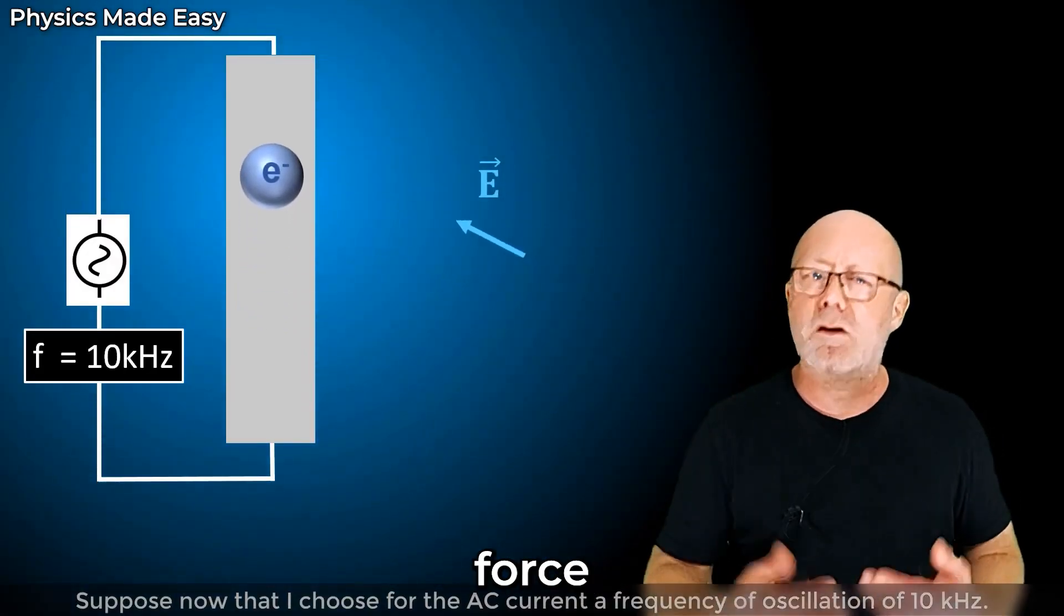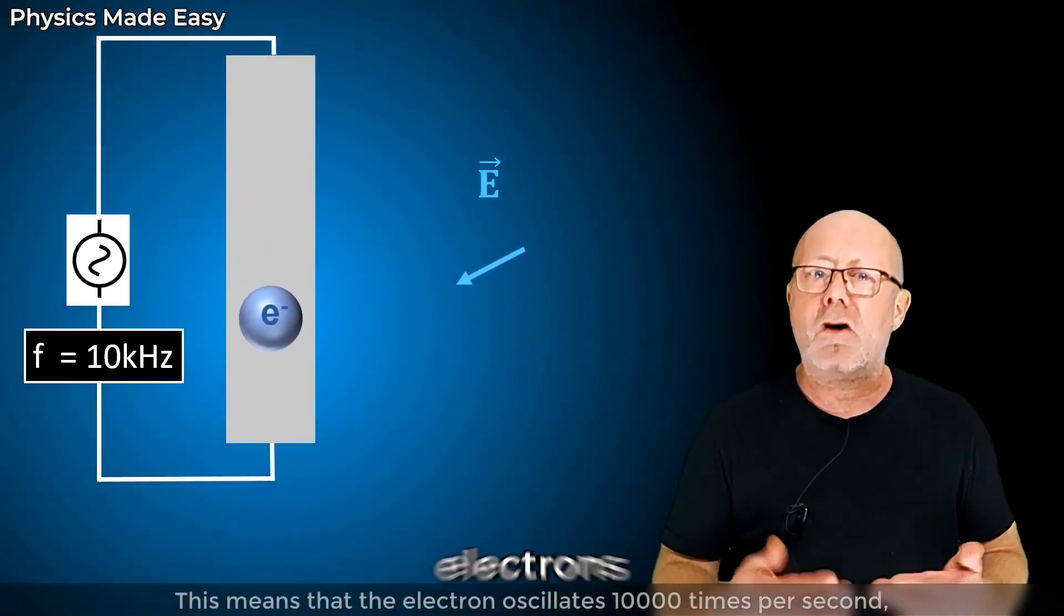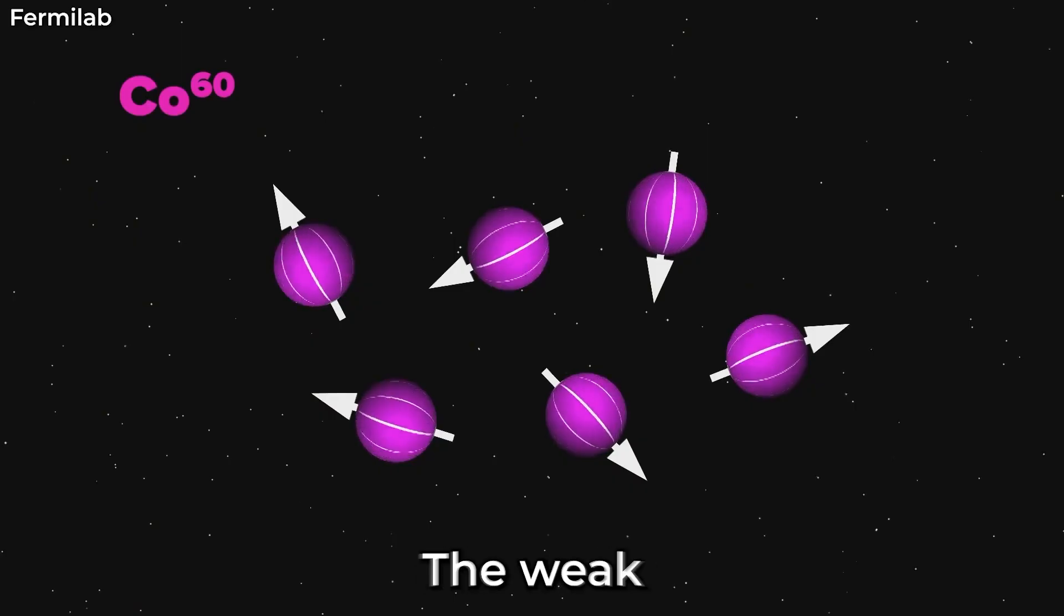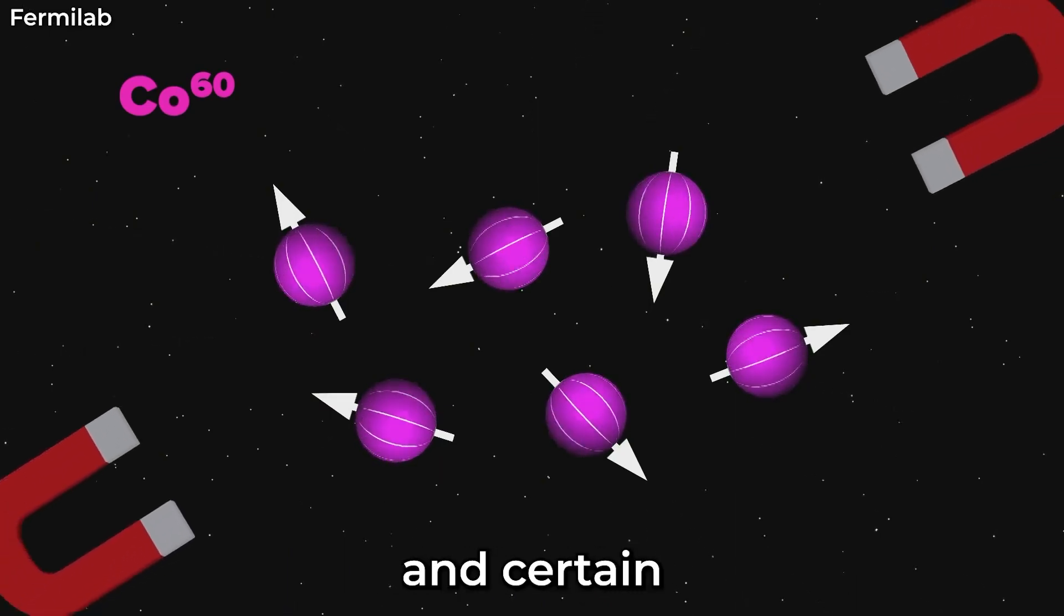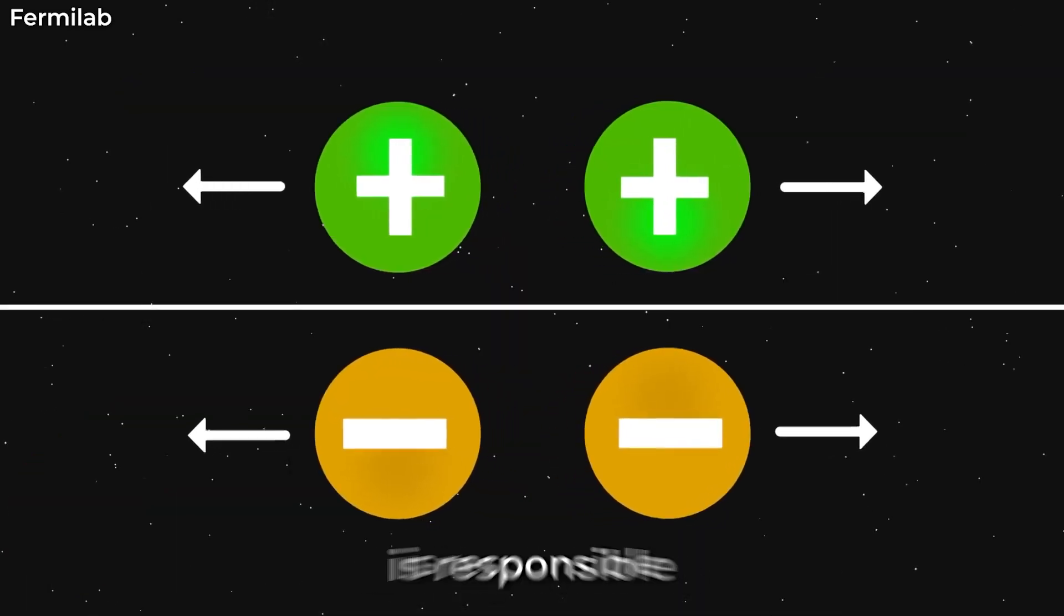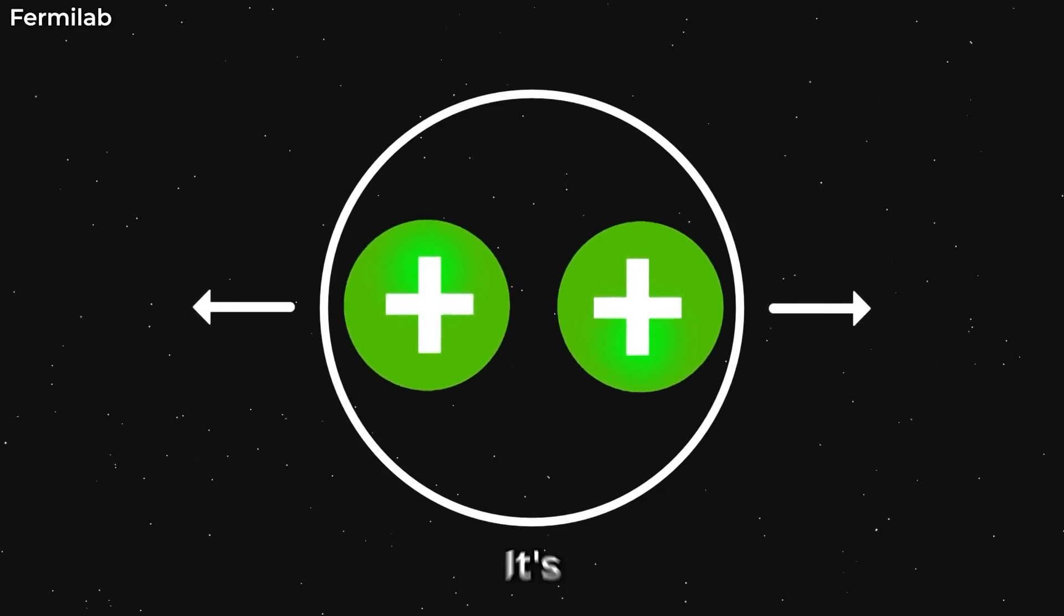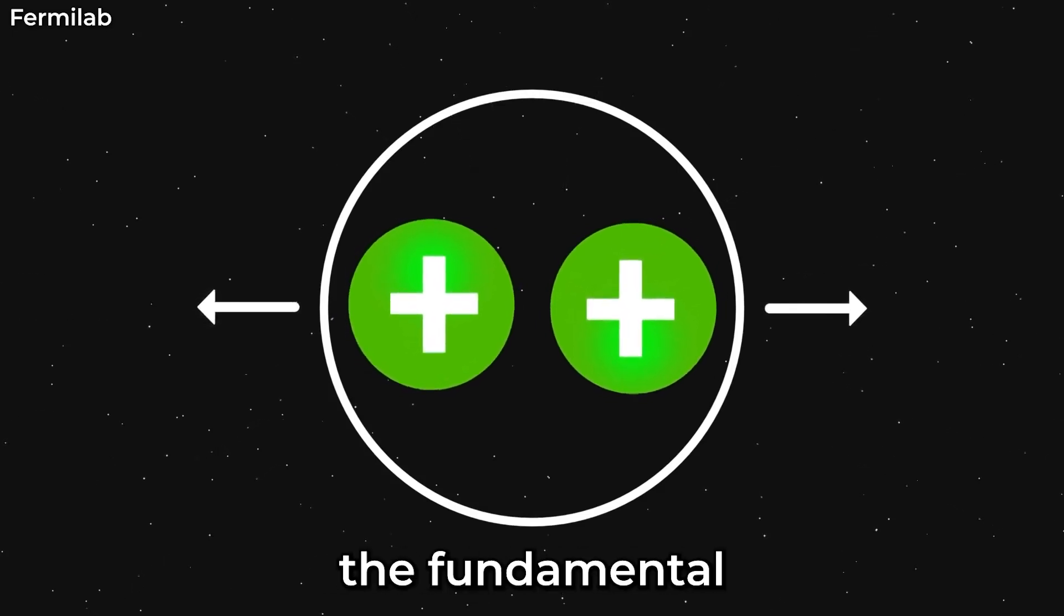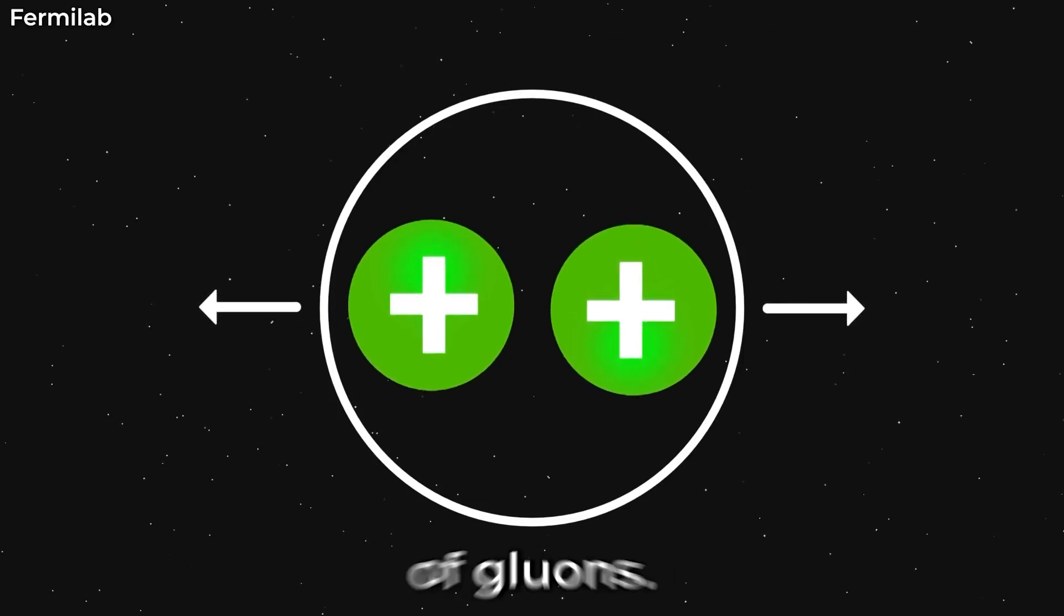The electromagnetic force is responsible for interactions between charged particles such as electrons and protons. The weak nuclear force is involved in processes such as radioactive decay and certain types of nuclear reactions. The strong nuclear force is responsible for holding atomic nuclei together. It's responsible for the interactions between quarks, the fundamental particles that make up protons and neutrons through the exchange of gluons.